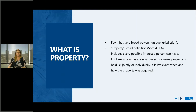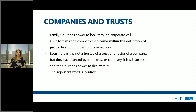Property has a very broad definition and includes basically every possible interest a person can have. Companies and trusts, whilst being separate legal entities, will be included as property if the parties effectively have control of that entity — even if a party isn't a trustee or director but still has control as the appointor, for example. The important aspect is control. If someone is merely a beneficiary of a family trust run by a grandparent and occasionally receives distributions, that's different — but if the parties effectively control it, it's included as an asset.